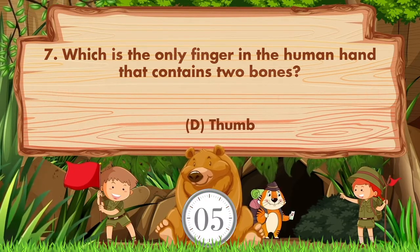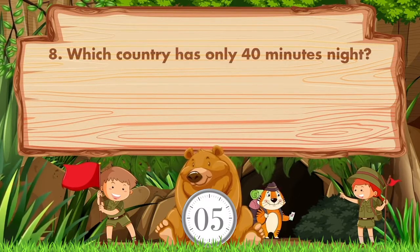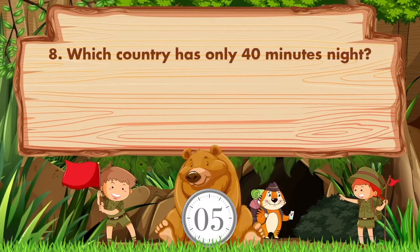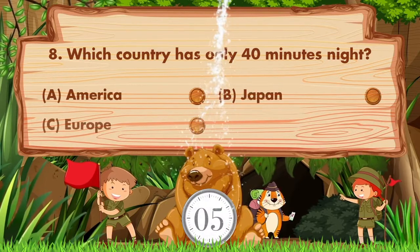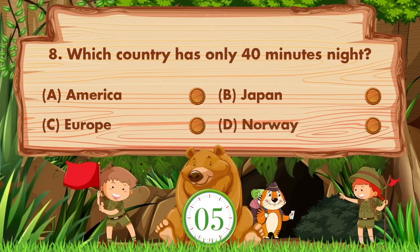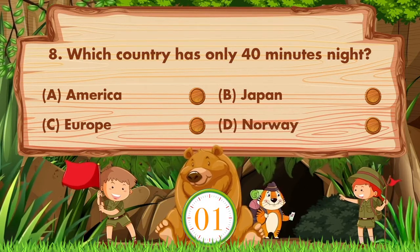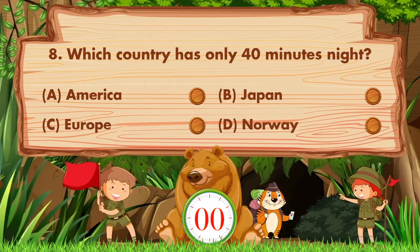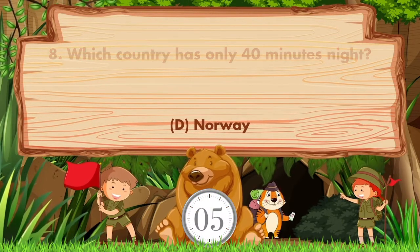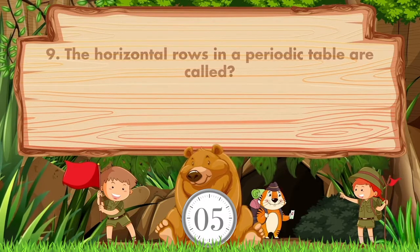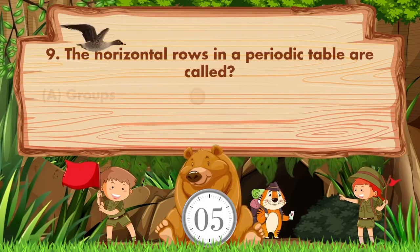Answer is option D, Thumb. Which country has only 40 minutes of night? Option A: America, B: Japan, C: Europe, D: Norway. Answer is option D, Norway.